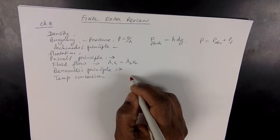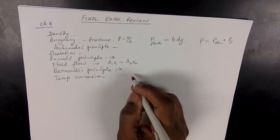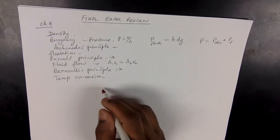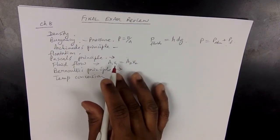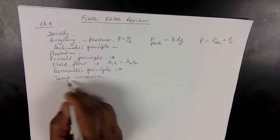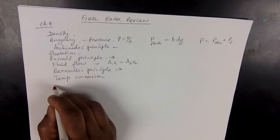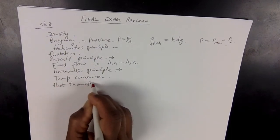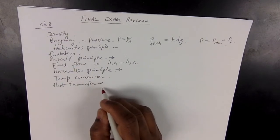Then heat energy — what is heat energy? Heat energy is mainly the sum of kinetic and potential energies of a system. How does heat flow? Heat flowing from one place to another has three methods, mentioned on page 308 onwards. One is conduction.